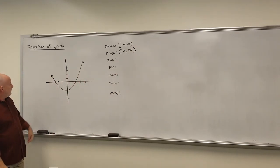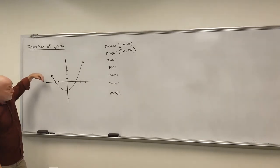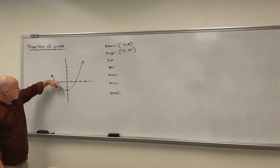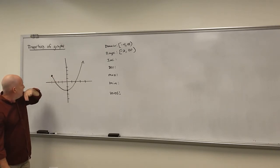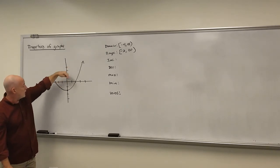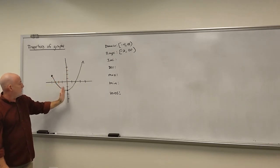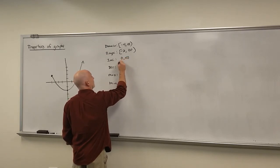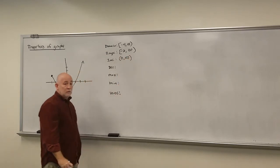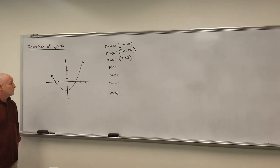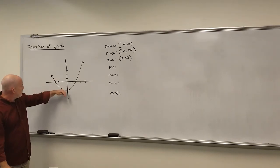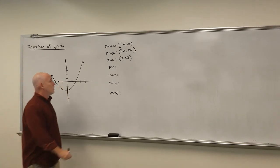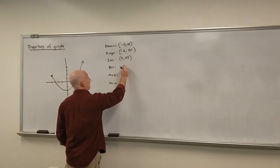When is this graph increasing? Walking left to right, the first part is going downhill — decreasing — but starting right at the y-axis we start walking up, so it's increasing from x = 0 to infinity: (0, ∞). Increasing and decreasing always get parentheses. Decreasing happens from x = −4 to x = 0: (−4, 0).